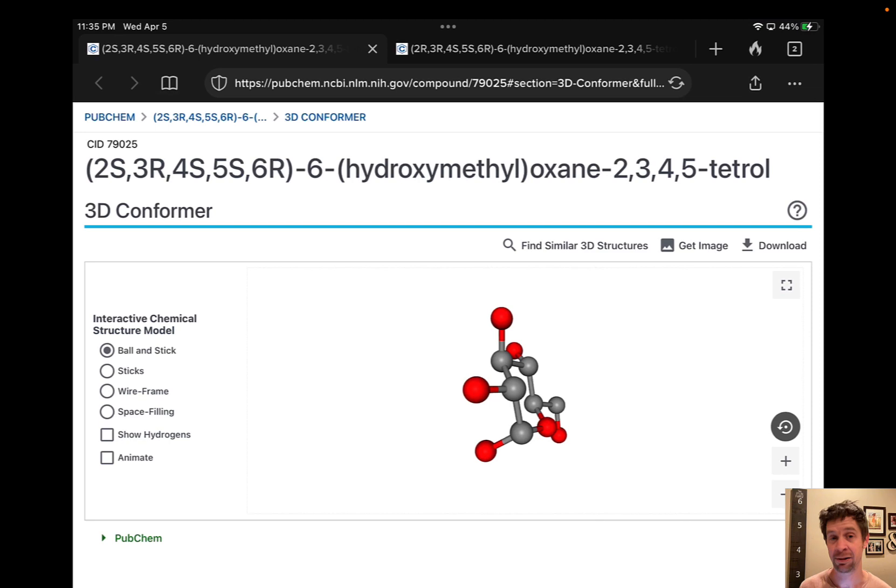So here we have the alpha anomer, alpha-D-glucose. And let's talk about how we know, first of all, that this is a D sugar and how we know it's alpha.